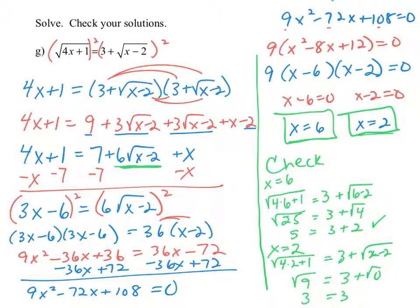It does involve quite a few steps: isolating the radical, squaring both sides, and then solving the resulting quadratic equation, and finally checking your work.